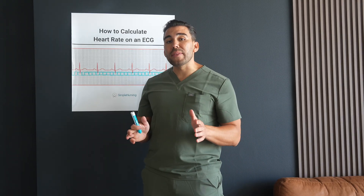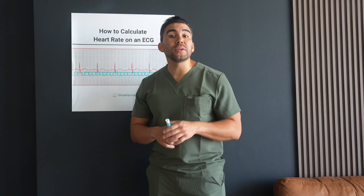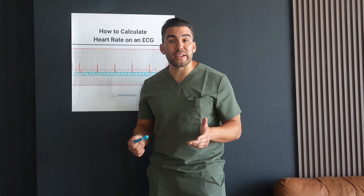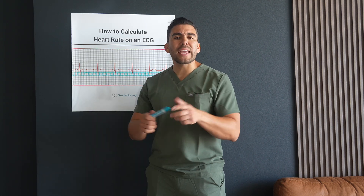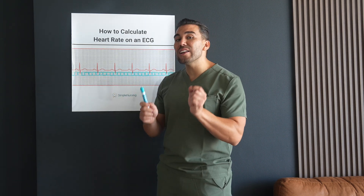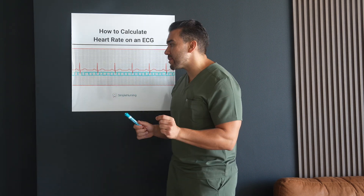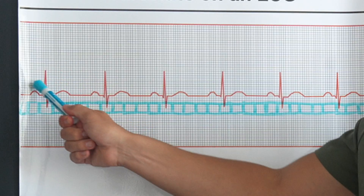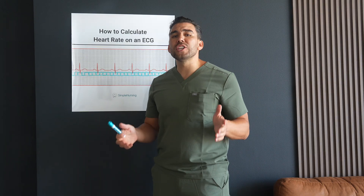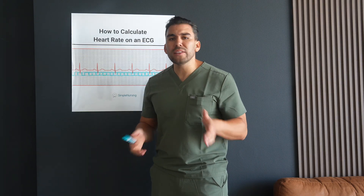The six second method can also be used to calculate the atrial rate. You simply count the P waves instead of the R waves — the P wave is right here before the R peak.